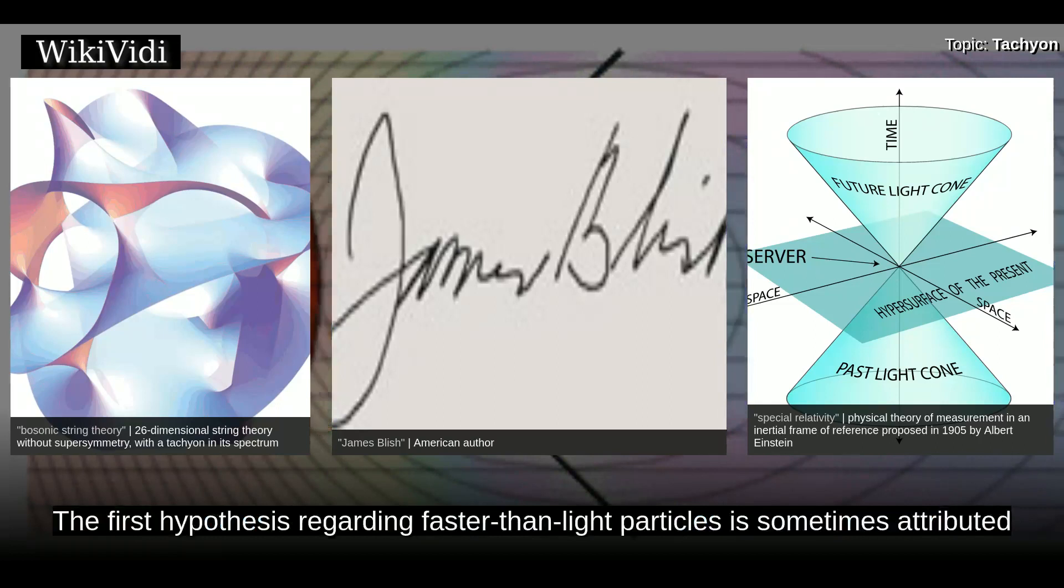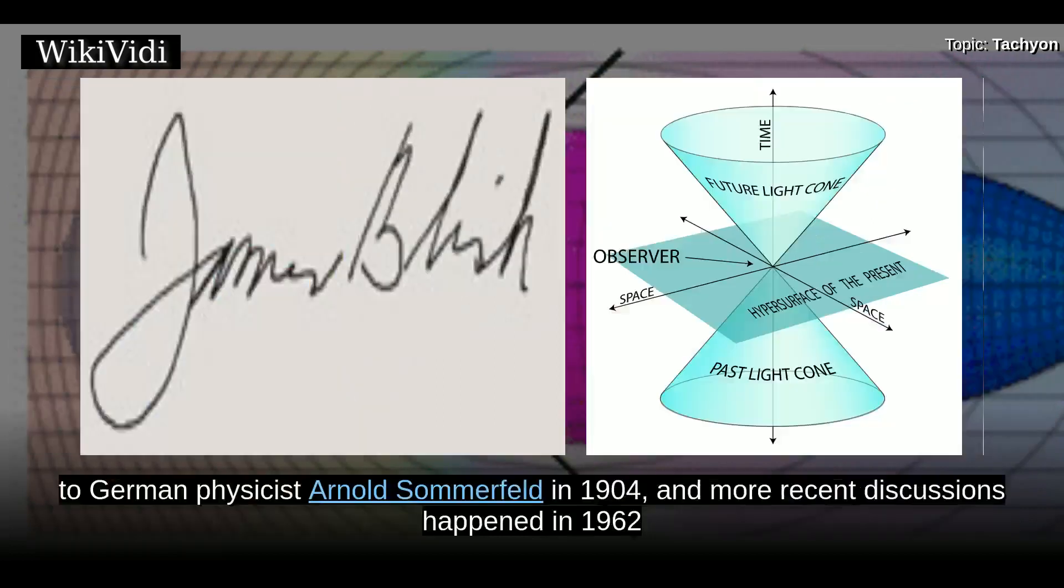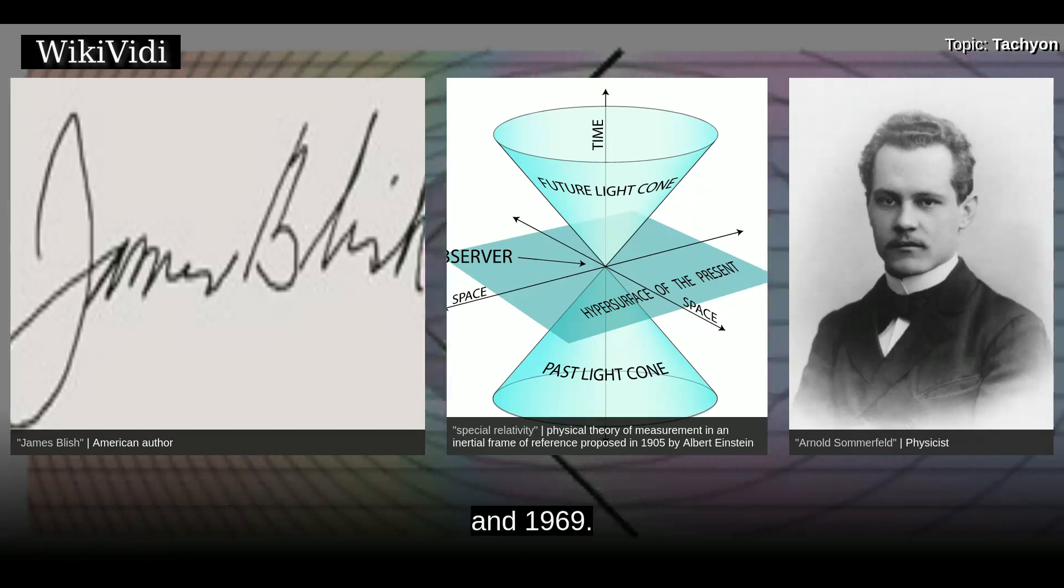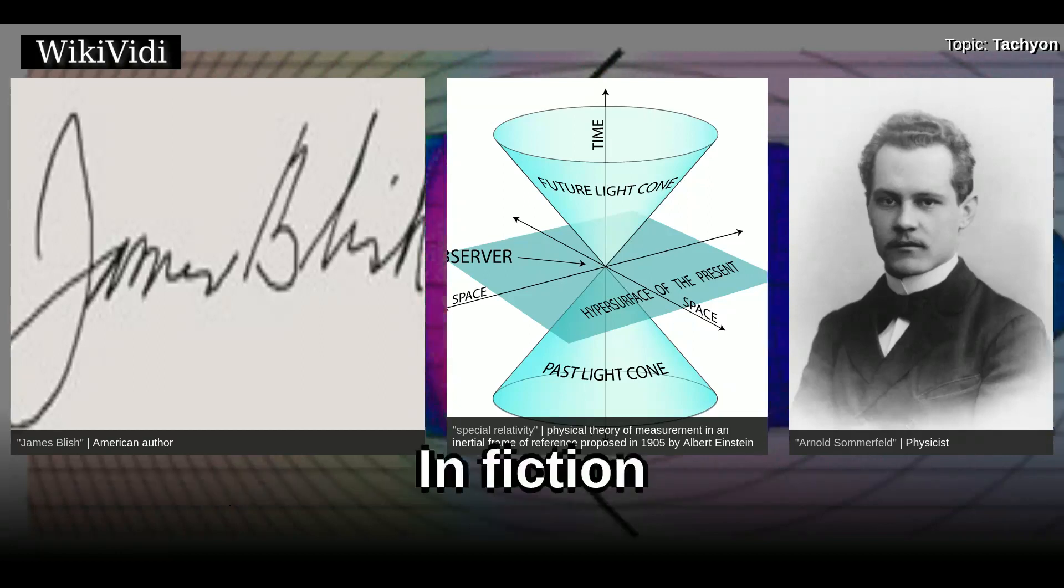The first hypothesis regarding faster-than-light particles is sometimes attributed to German physicist Arnold Sommerfeld in 1904, and more recent discussions happened in 1962 and 1969.